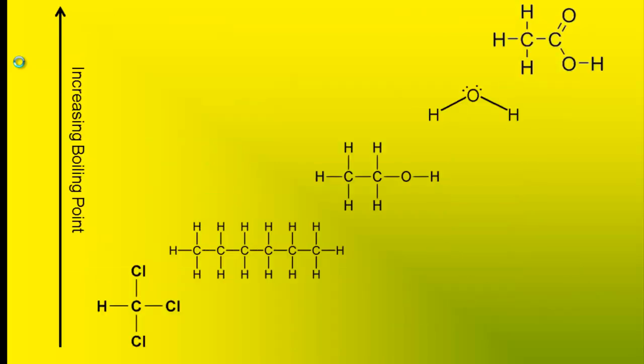Let's take a closer look at each of these compounds' structure. On the bottom left is chloroform and up at the top right is acetic acid. They're listed in the same way as the table — chloroform, hexane, ethanol, water, acetic acid — in the order of increasing boiling point.